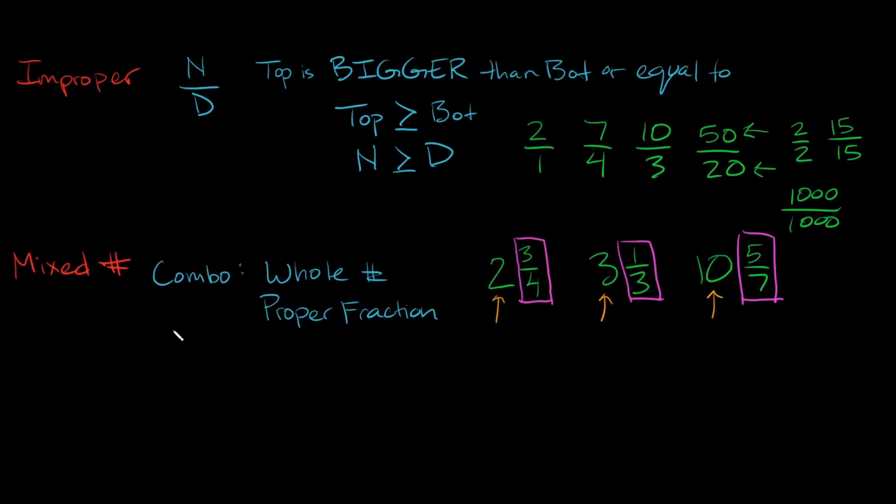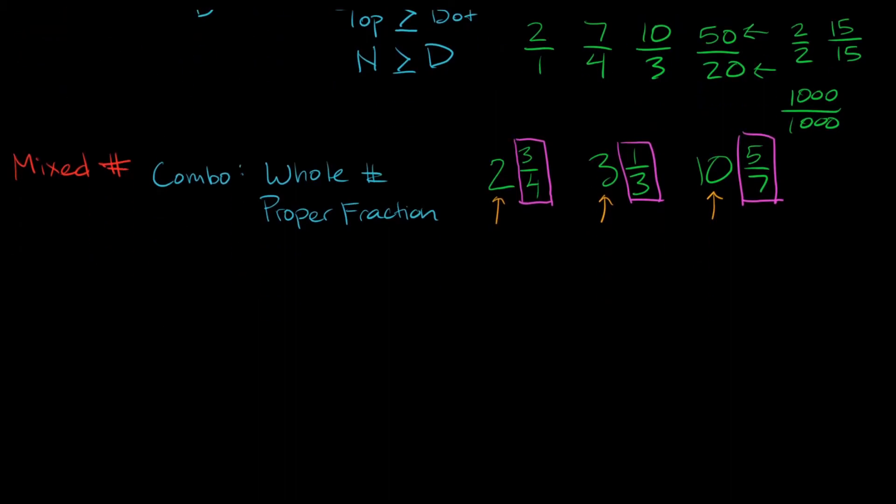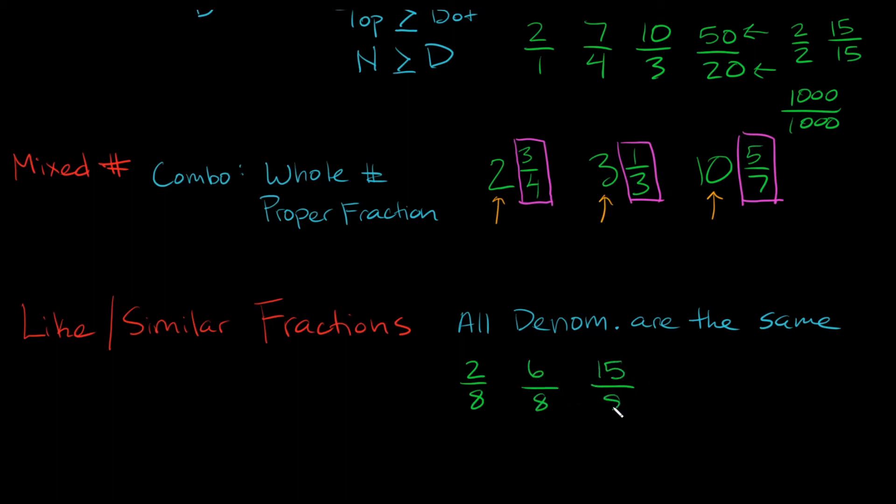Now two more that I want to quickly introduce you to, they're kind of just smaller categories, but I think they're important to point out nonetheless. So we have something called like fractions, or another way of calling them is similar fractions. Like or similar fractions, they're both the same thing. So these are just when all the denominators are the same. All the denominators are the same. So what does that mean? So for example, if I had 2 over 8, 6 over 8, 15 over 8. So as you can see, the denominator in all these three fractions are the same. They all have the same denominator, which is just 8.